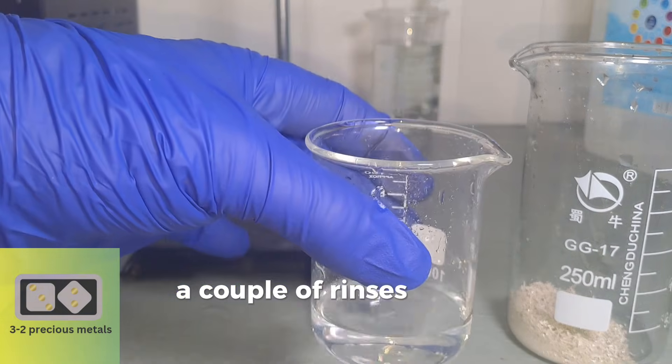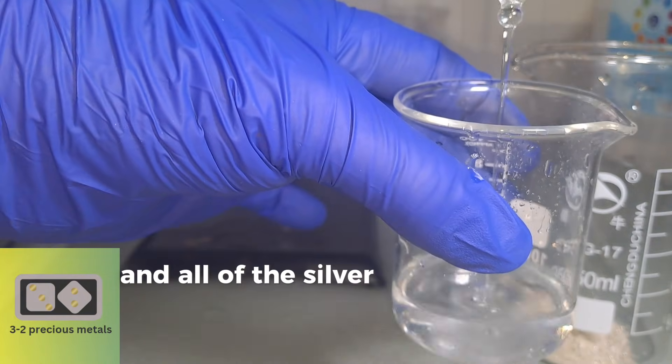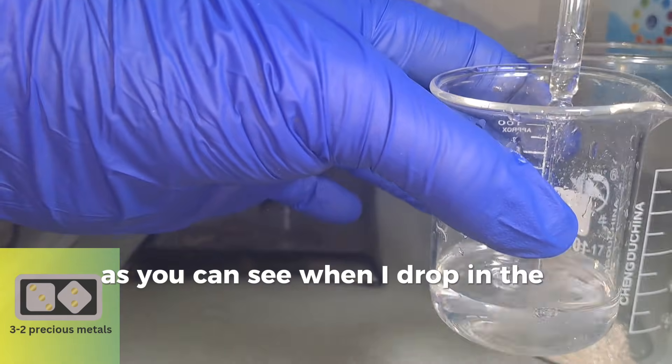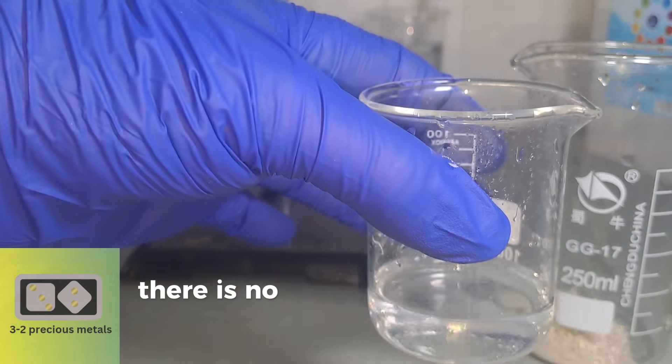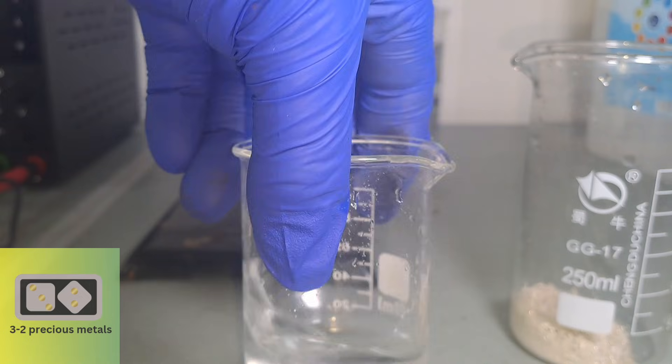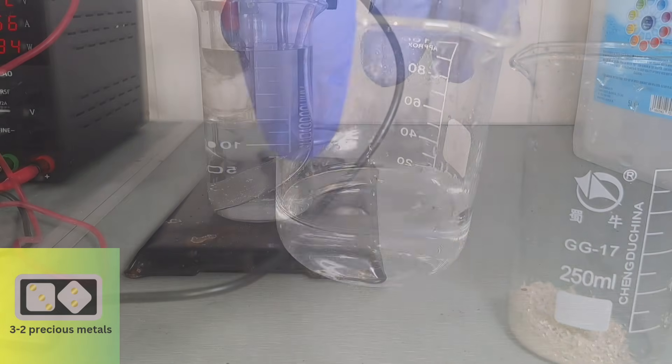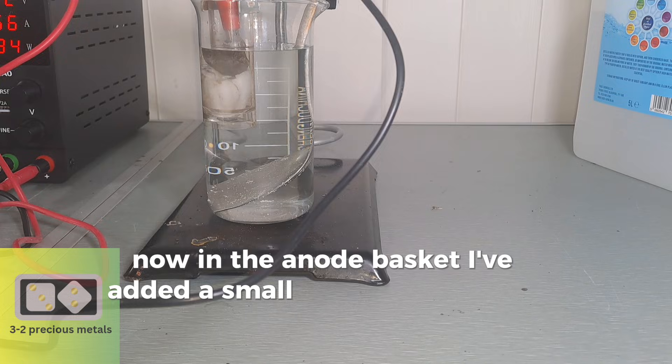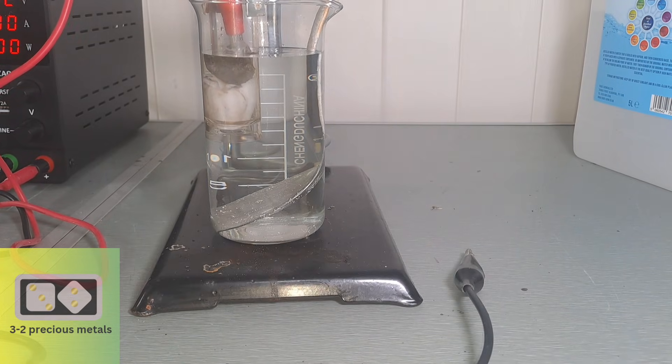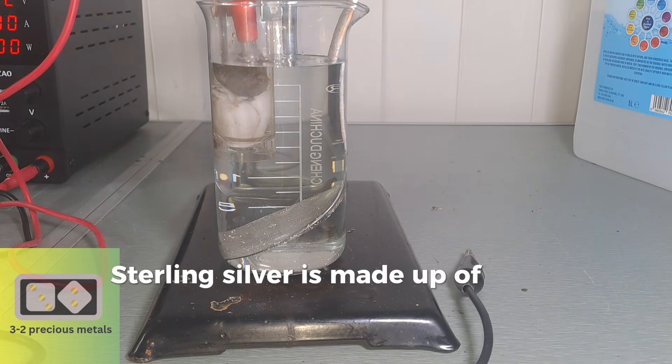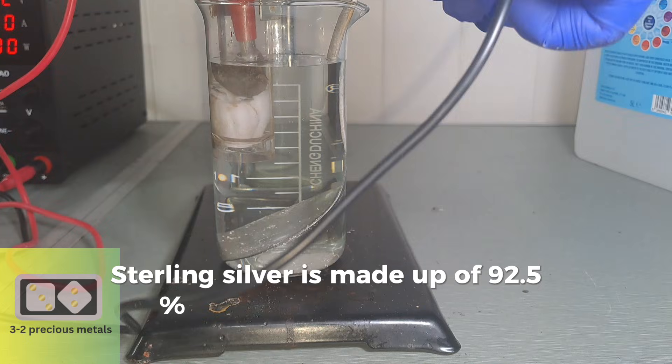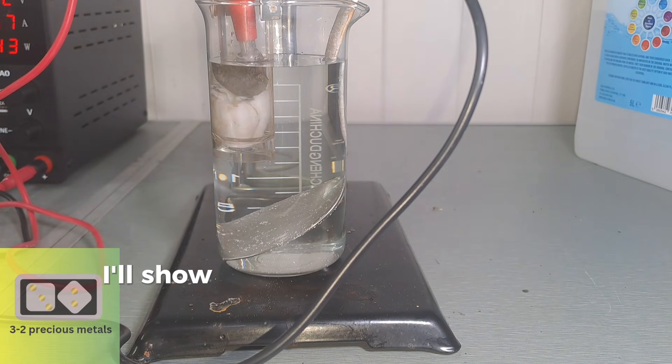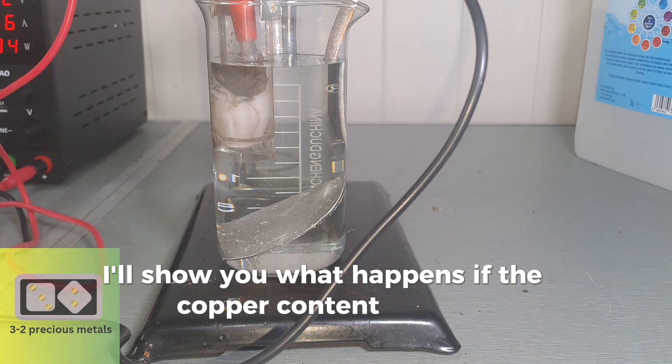A couple of rinses later, and all of the silver nitrate has been washed from the crystals. As you can see, when I drop in the hydrochloric acid, there is no white precipitate. Now, in the anode basket, I've added a small button of sterling silver. Sterling silver is made up of 92.5% silver and 7.5% copper. I'll show you what happens if the copper content is high.